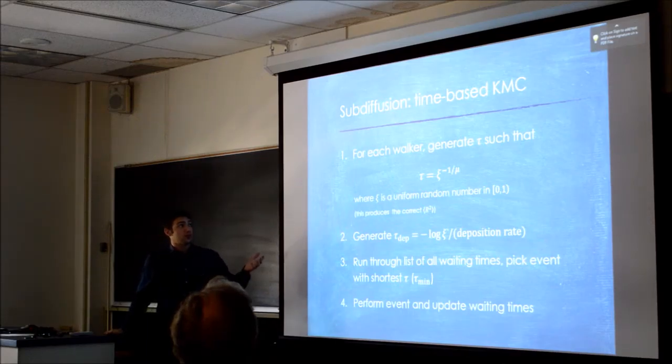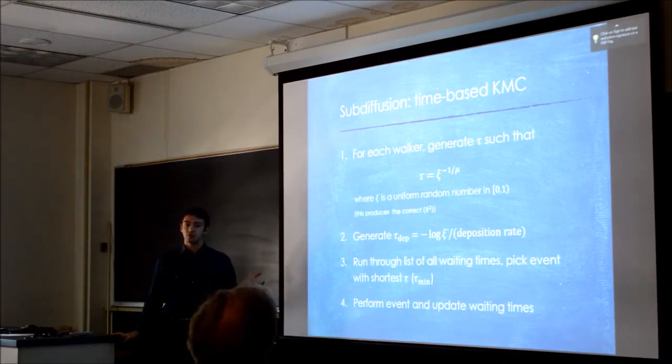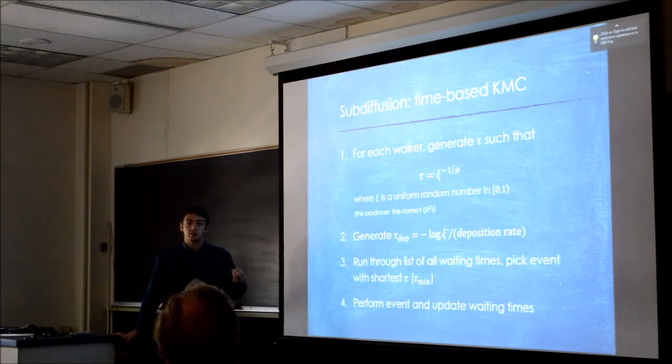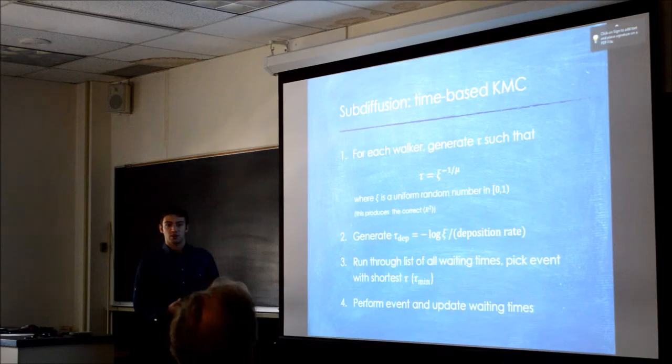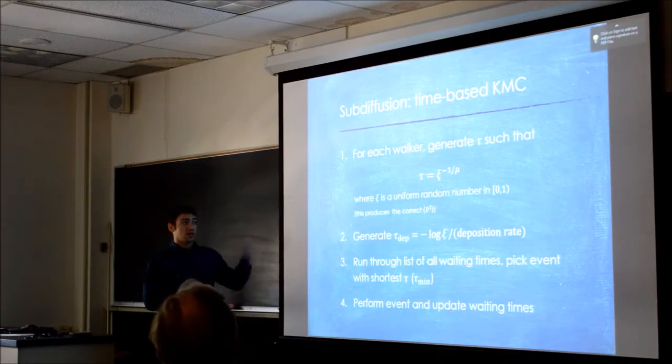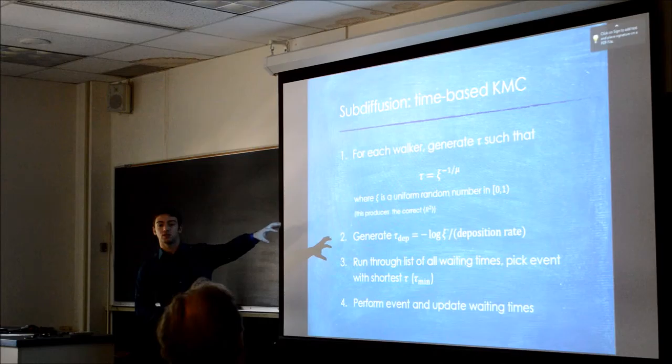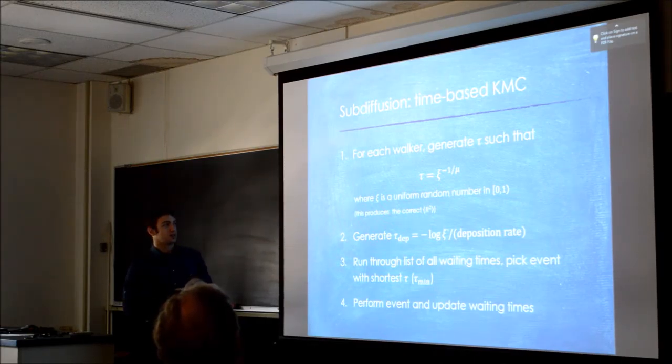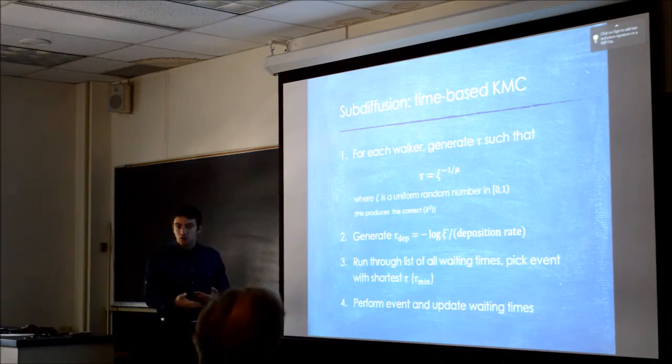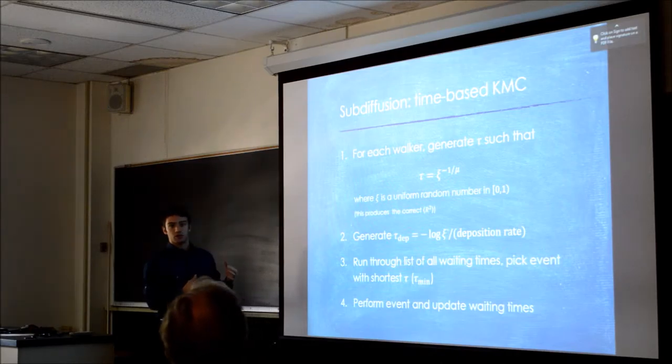Now, to do Kinetic Monte Carlo for these sub-diffusive walkers, we actually take a time-based approach, where we look at the times before the next event rather than the rate. These things are equivalent, because one over the time is the rate. But because these guys have these waiting times, so each walker has a waiting time that follows this distribution—you pick a random number between zero and one, and you take it to the power minus one over mu. This isn't random, this comes from something, so I'll talk to that in a second. But because each monomer, each walker, has this natural waiting time, it's a little bit more natural to look at this from a time-before-next-event picture rather than from a rate picture.